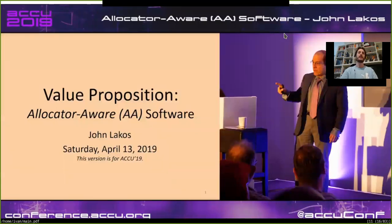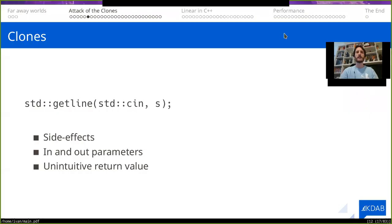There was a nice talk at the ACCU in 2019 by John Lakos, one of the great minds of the C++ community. He claimed that it's impossible to have an efficient functional programming pure API in C++. One of the examples where the API in C++ suffers because it's meant to be as efficient as possible is the std::getline function.